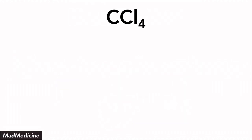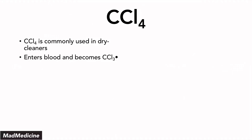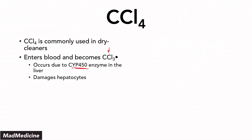One of the chemicals you need to know is carbon tetrachloride — a very classic chemical that gets tested a lot. This is something commonly used in dry cleaners, so if a vignette has someone who's a dry cleaner, start thinking about carbon tetrachloride and free radical injury. Carbon tetrachloride enters the blood and then becomes carbon trichloride, a free radical form, because of the CYP450 enzyme in the liver. This ends up damaging the hepatocytes.